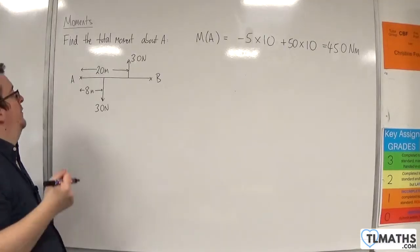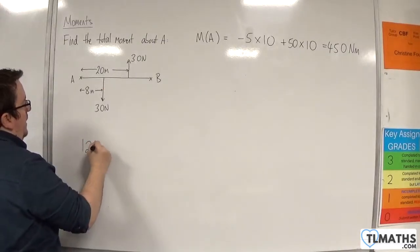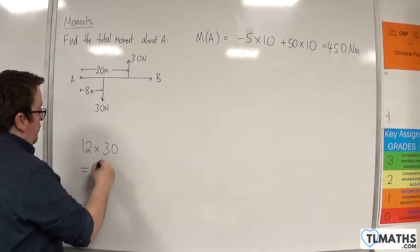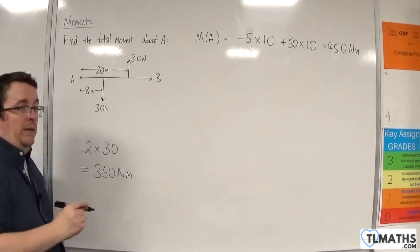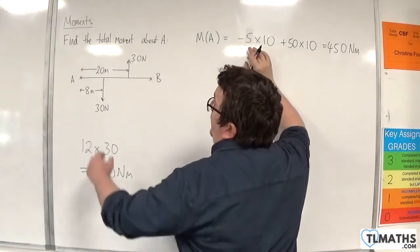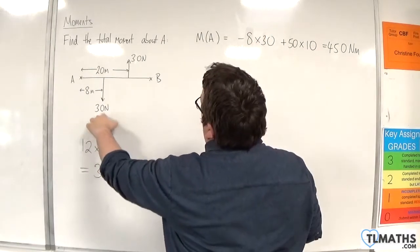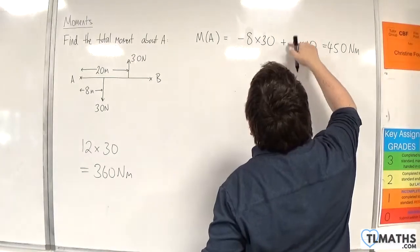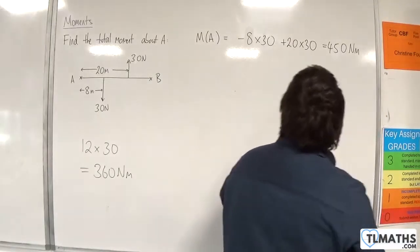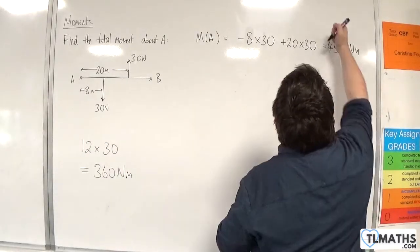Now, what would we expect the answer to be? So, this distance is 12 metres, and I need to multiply that by the force, 30. So, we should be reckoning that that's going to be 360 Newton metres. Let's check. So, we would be minus 8 times 30, and then 20 times 30. Minus 8 times 30, plus 20 times 30, and, of course, that's the 360, as we expected.